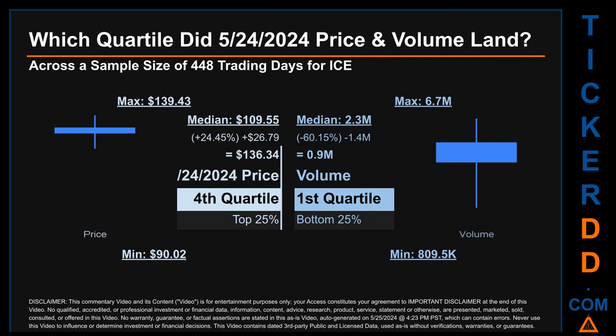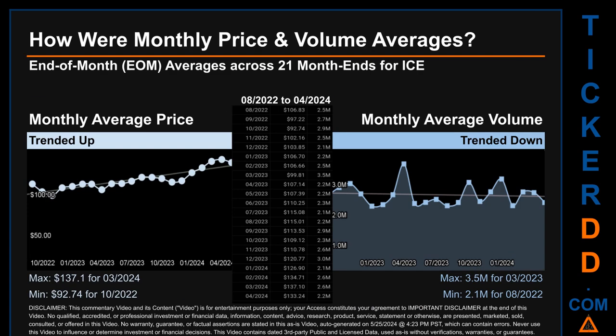Quartiles tell us about the spread of a data set by breaking it into quarters, just like how the median breaks the set in half. Descriptively, ICE has a median price of $109.55. Therefore, May 24, 2024's price was higher than that middle marker by 24.45%. The day's volume of 0.9 million was less than the median by 60.15%.